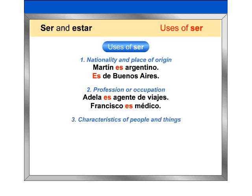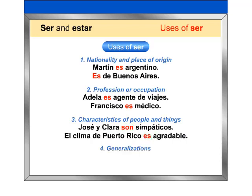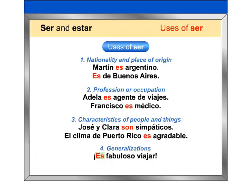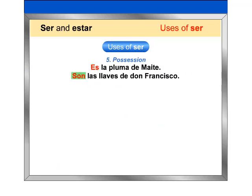3. Characteristics of people and things: José y Clara son simpáticos. El clima de Puerto Rico es agradable. 4. Generalizations: Es fabuloso viajar. Es difícil estudiar a la una de la mañana. 5. Possession: Es la pluma de Maite. Son las llaves de Don Francisco.